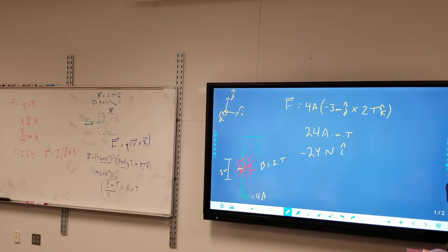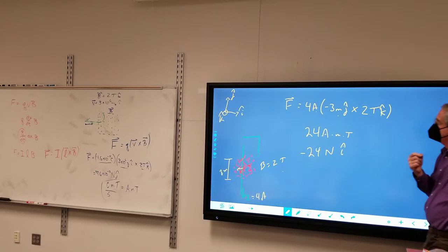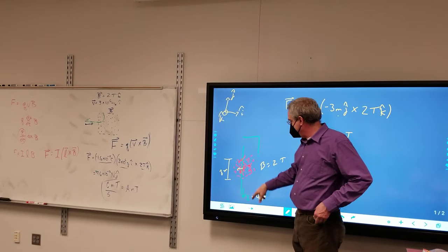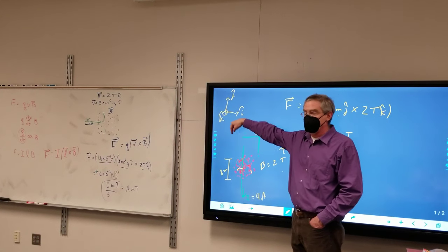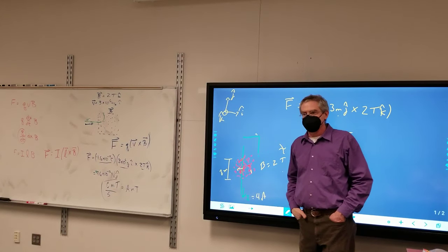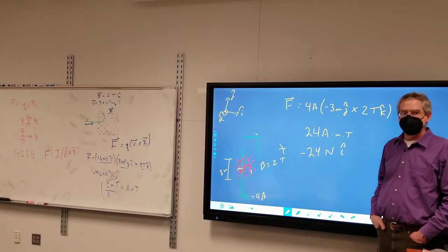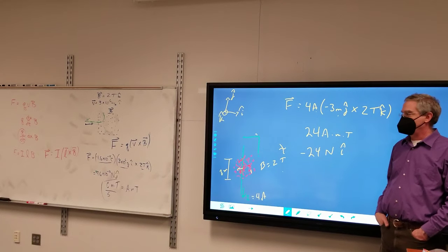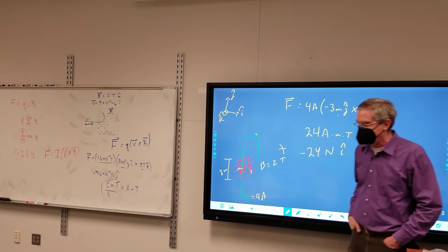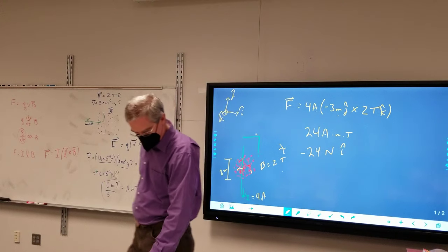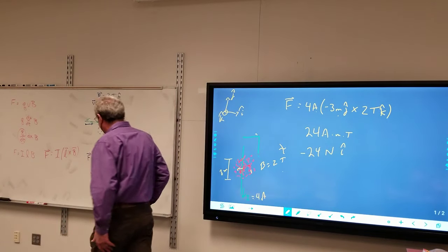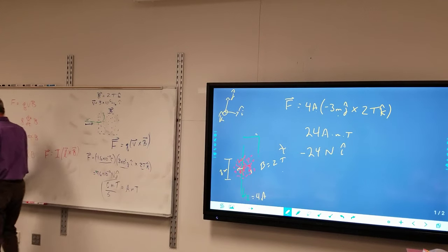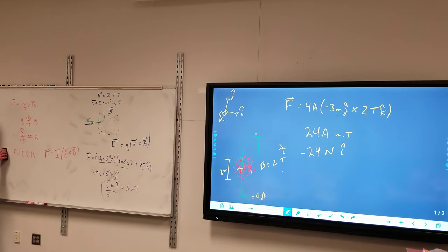Questions here? How did you get the negatives? Because the current is flowing down, L hat would be downwards in the negative J hat direction. That's why it's negative. I gotcha.